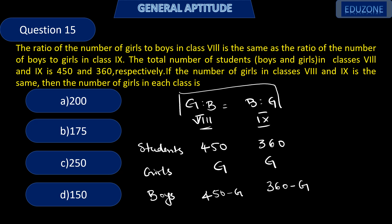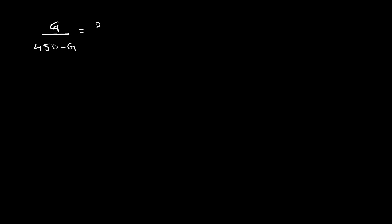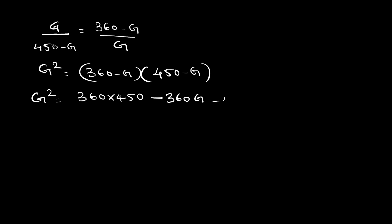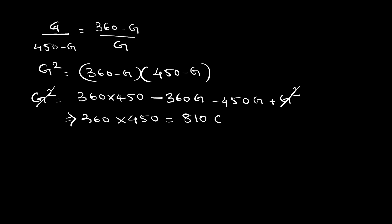Equating: girls to boys ratio in class 8 equals boys to girls ratio in class 9. That is G divided by (450 minus G) equals (360 minus G) divided by G. Cross multiplying: G squared equals (360 minus G)(450 minus G), which expands and simplifies — G squared cancels — giving 360 into 450 equals 810G, and the number of girls G equals 200.